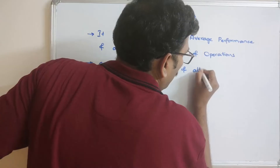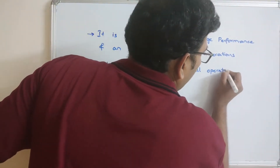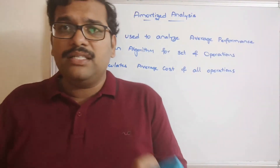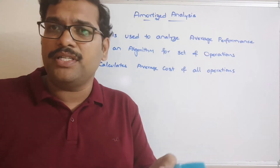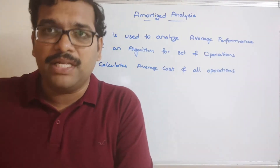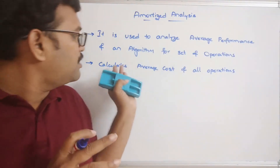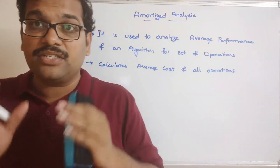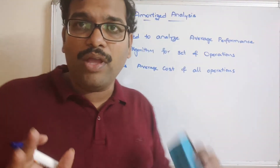For example, if an algorithm consists of 10 operations, some operations give the worst case and some give the best case, and we need to average the cost of all the operations. That will give us the amortized analysis.